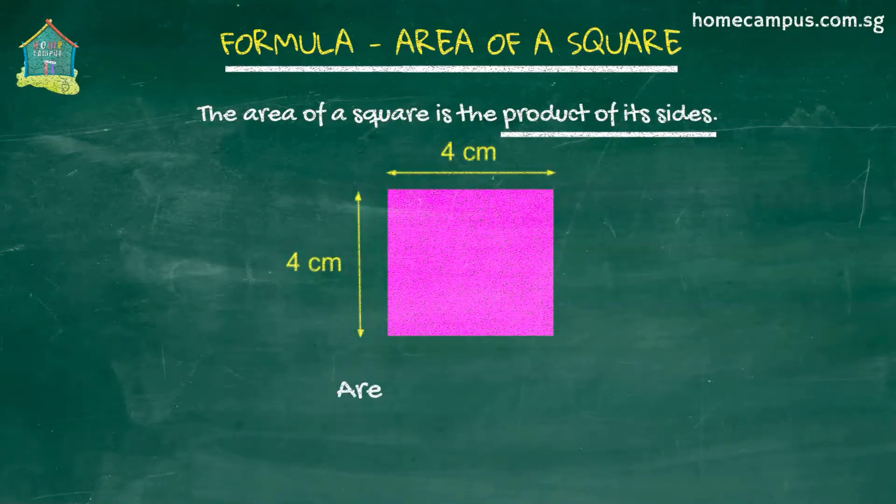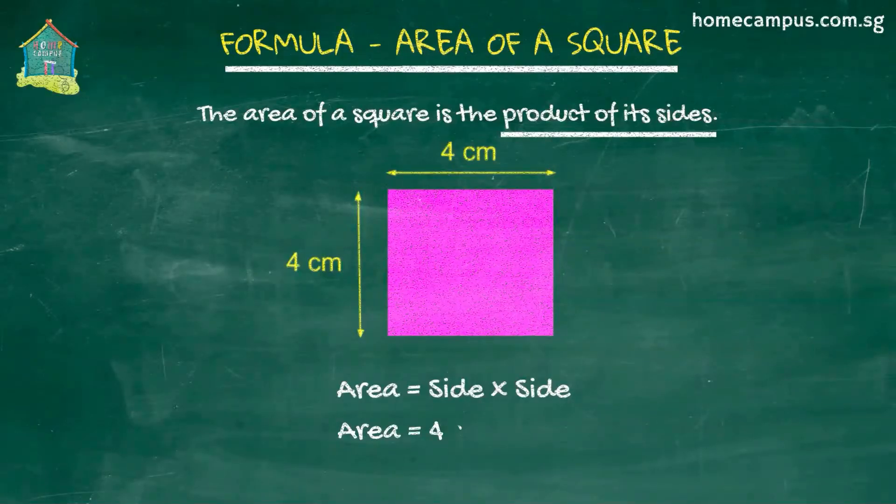This square over here has a side of 4 centimeters. Its area is 4 centimeters times 4 centimeters, which is equal to 16 centimeters square.